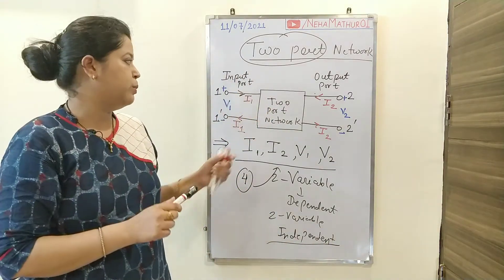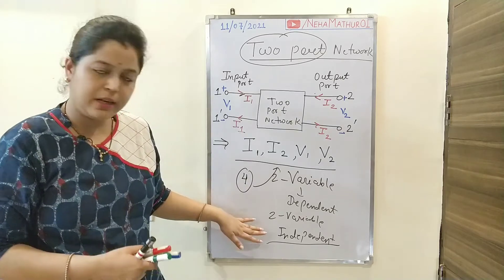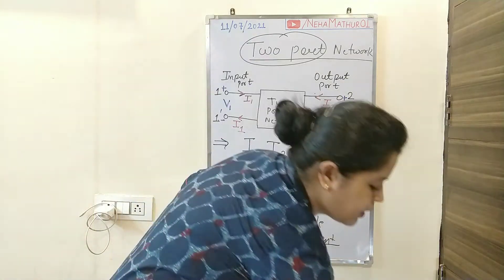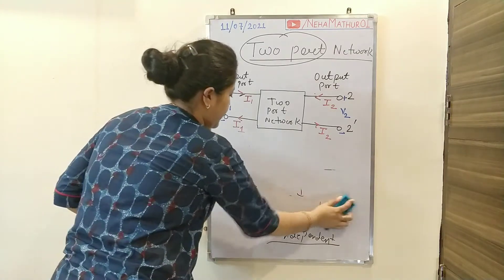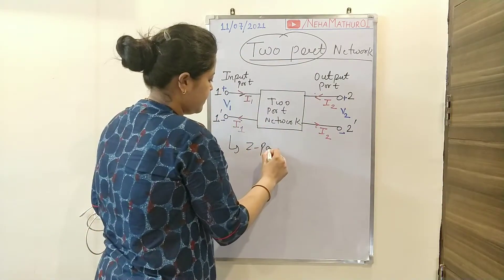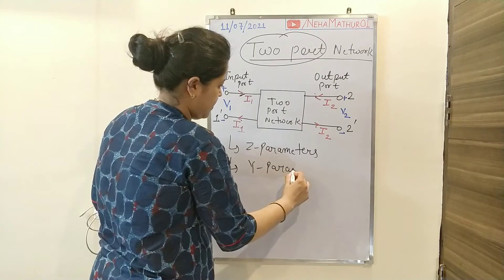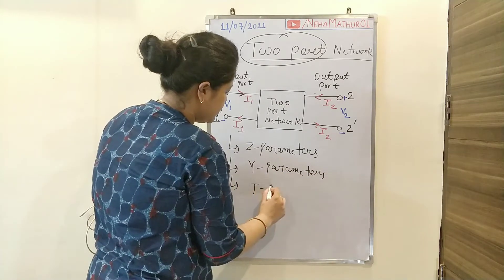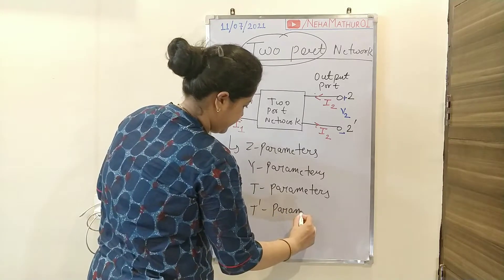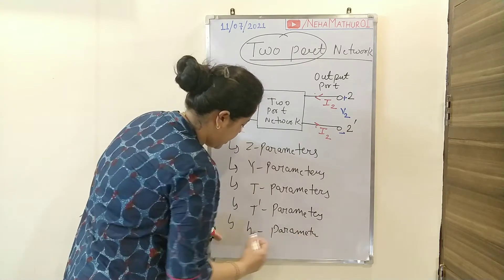Based on which of the four variables are dependent and which are independent, we have six types of two-port network parameters. They are: Z parameters, Y parameters, T parameters, T-dash parameters, H parameters, and G parameters.